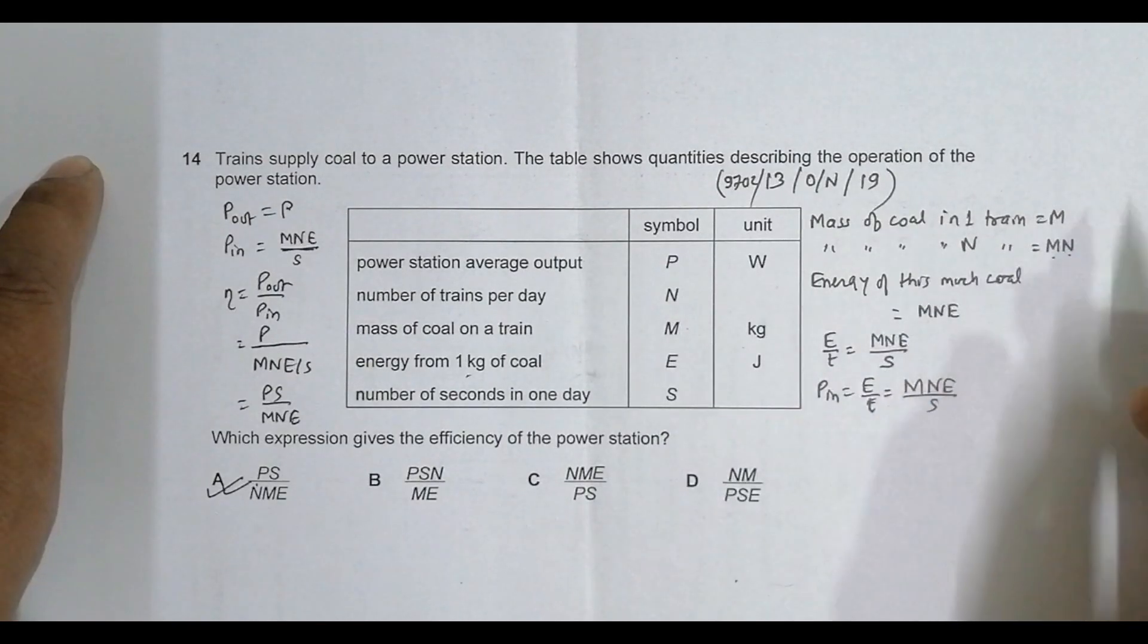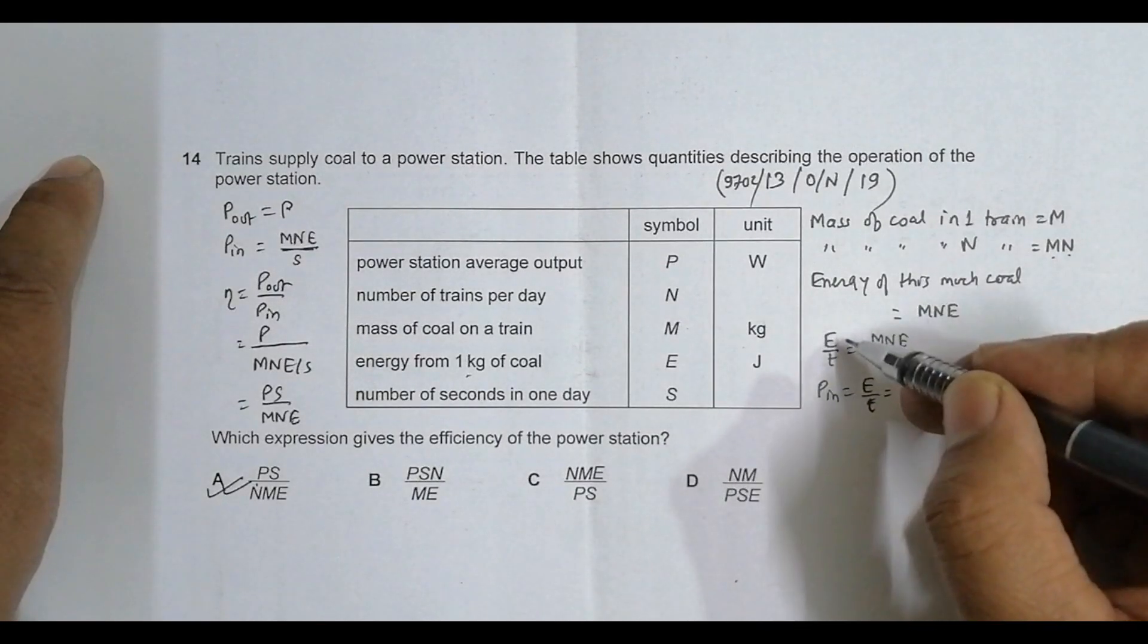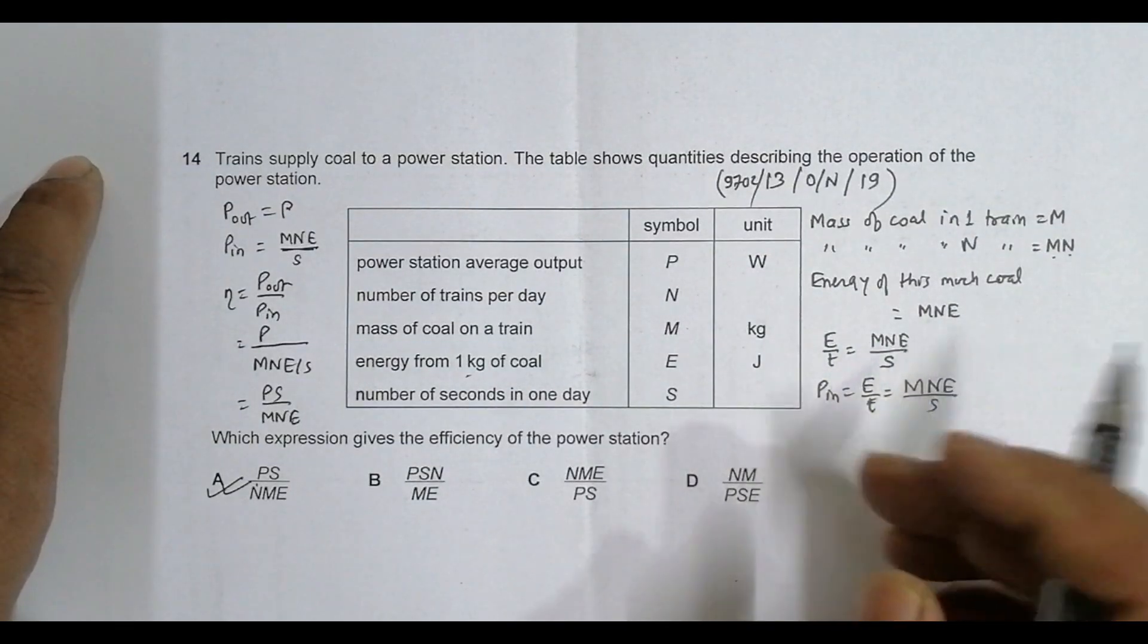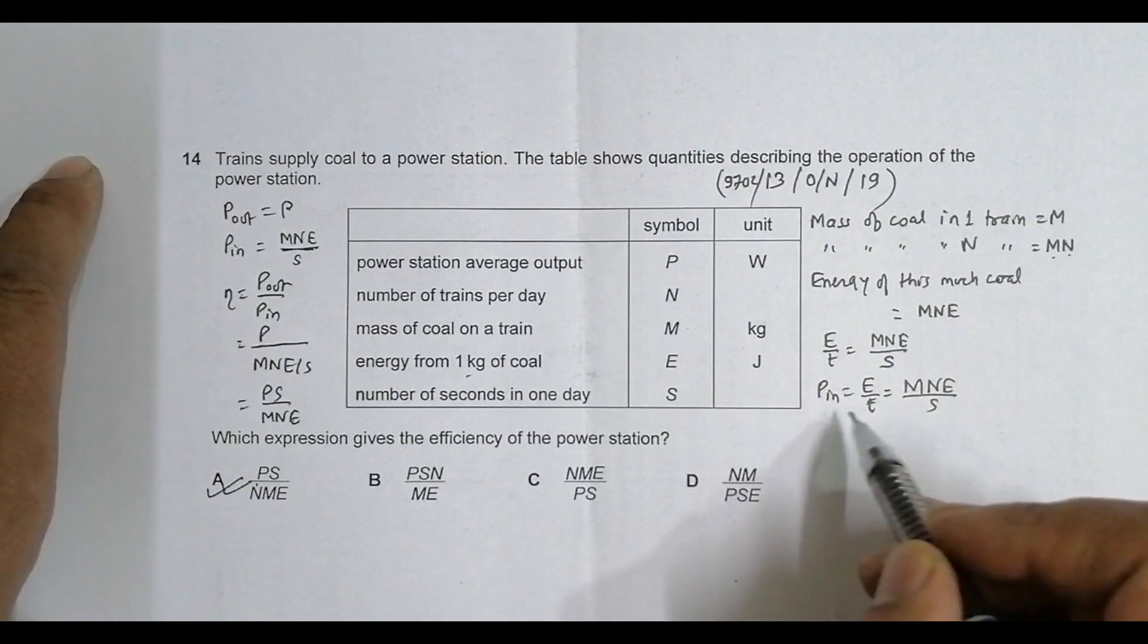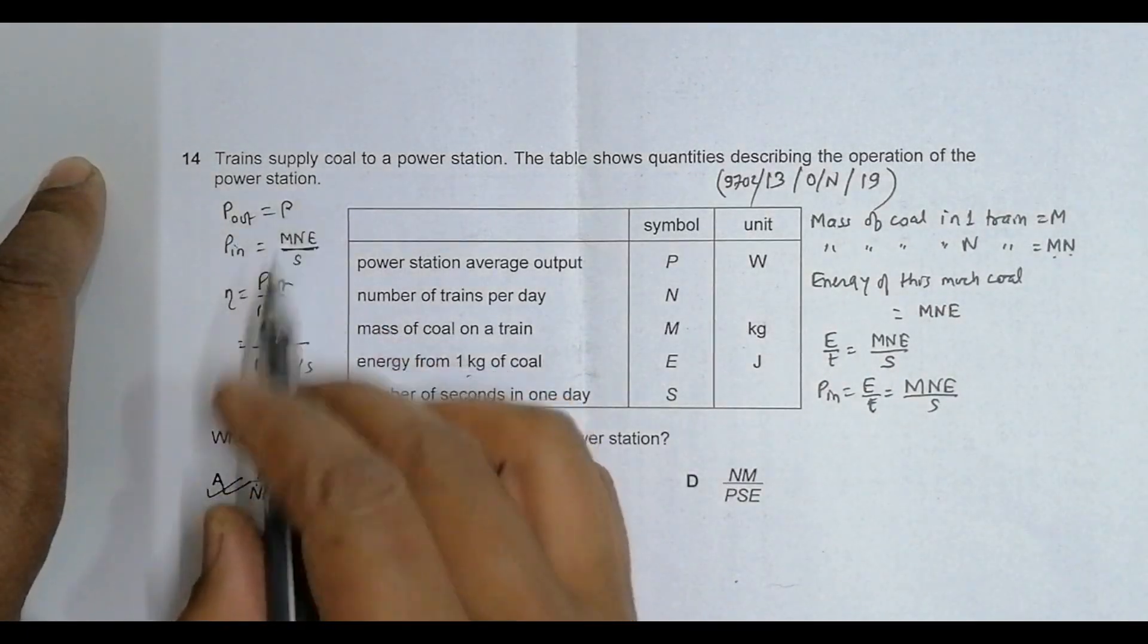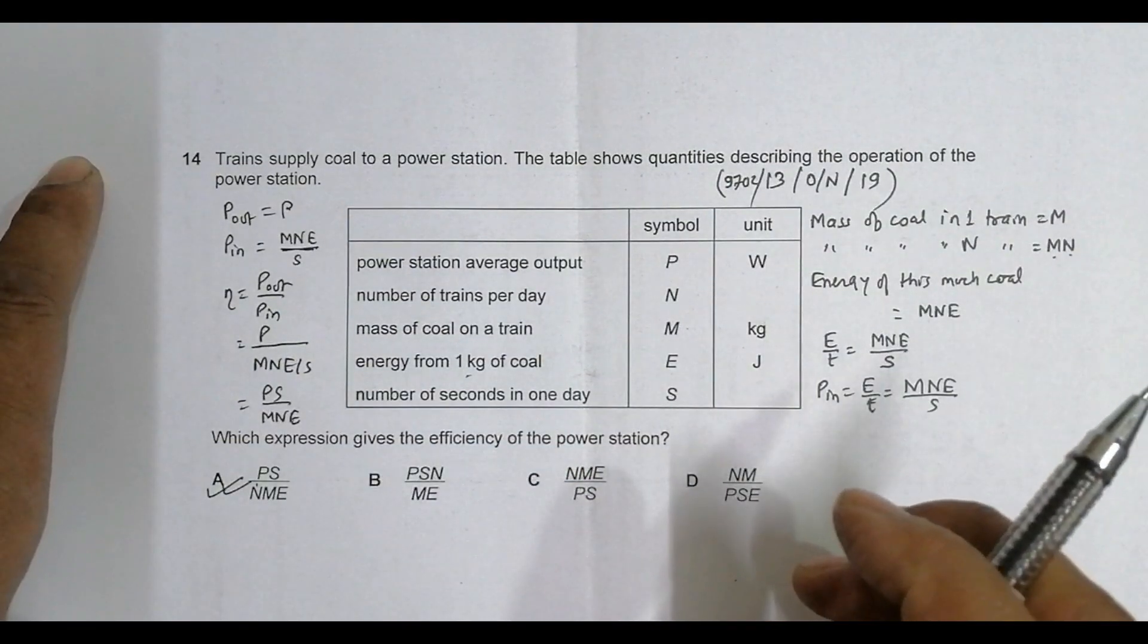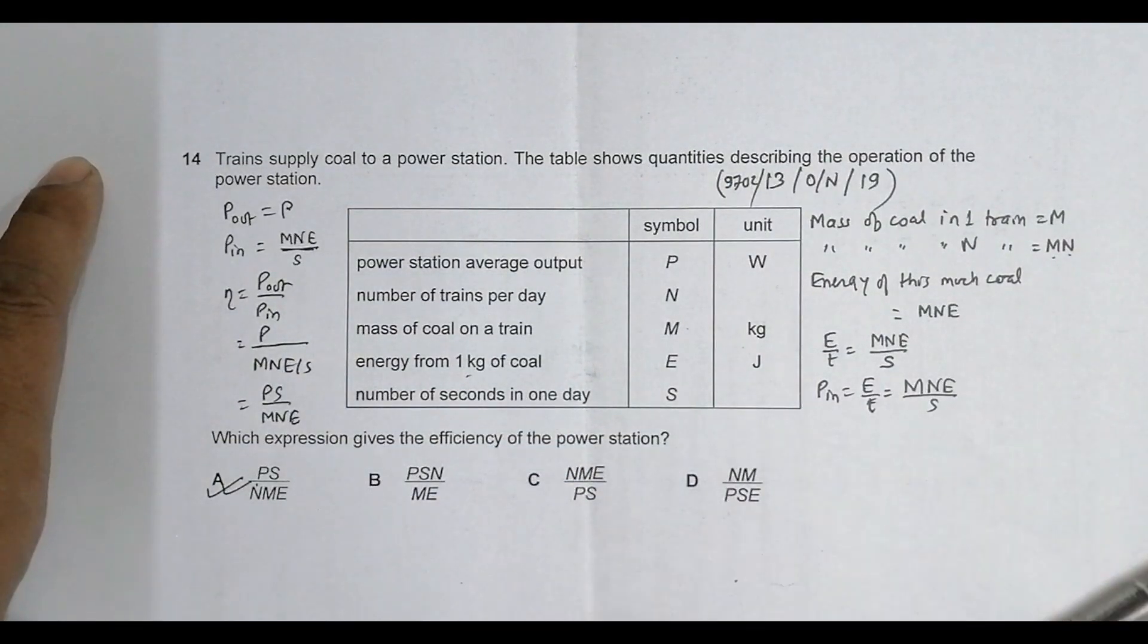This is the power input, the rate at which energy is transferred from the trains. So we got efficiency like this. It's a simple approach to what could be a bit complex problem.